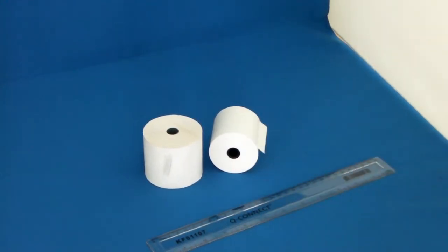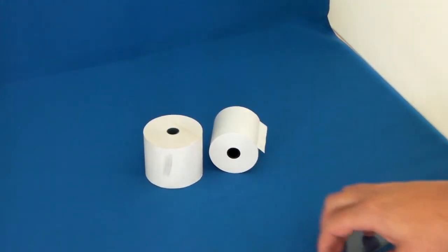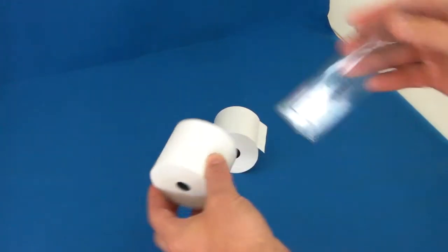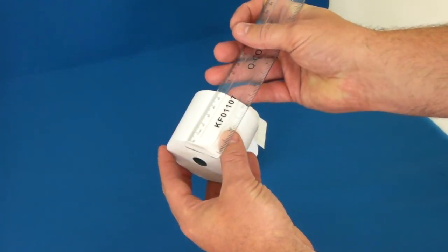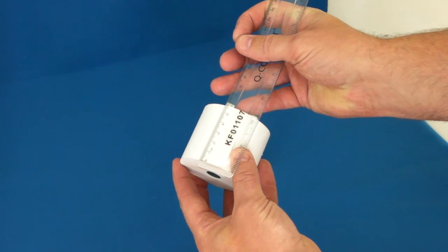Next, you need to work out the measurement. Simply take a ruler and measure across the roll, or the width of the roll. In this case, 57mm.